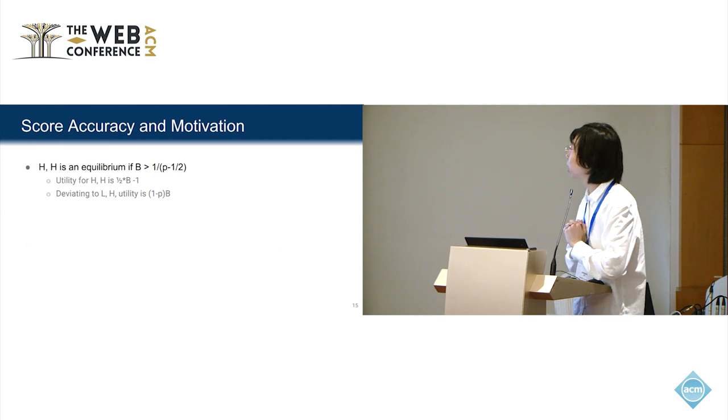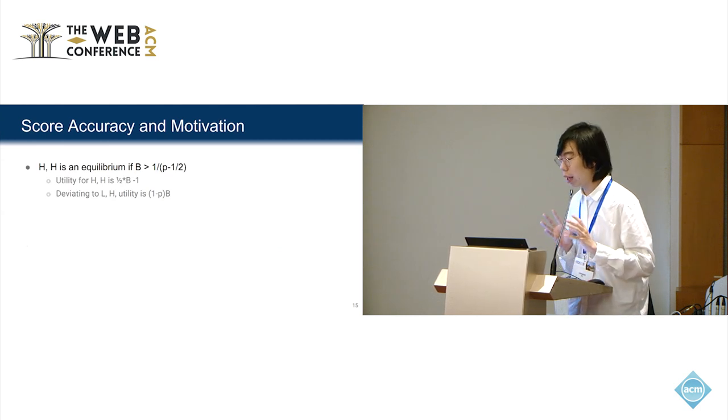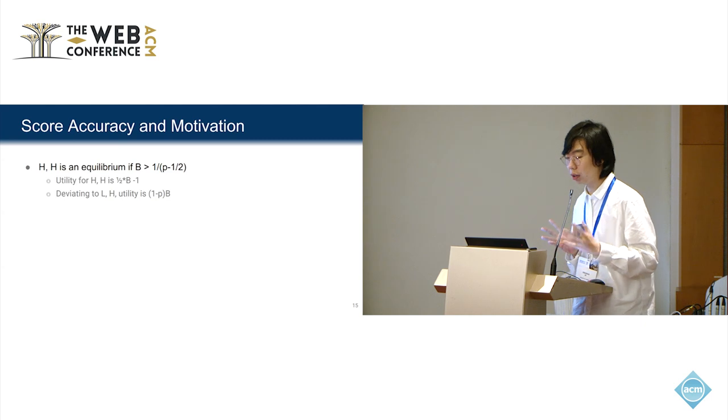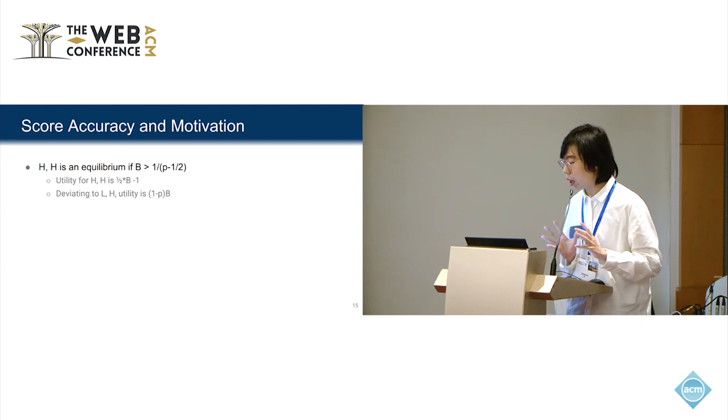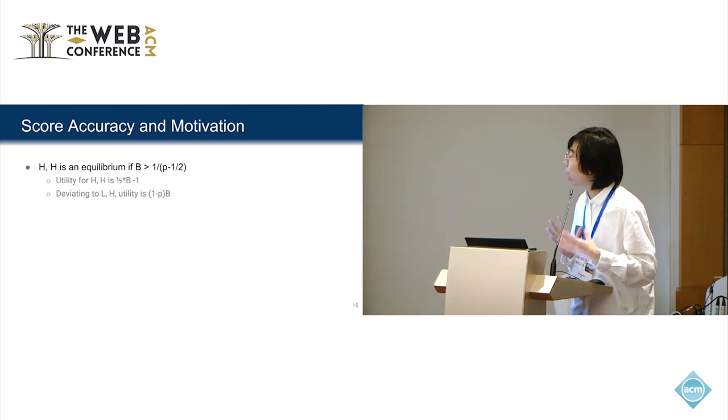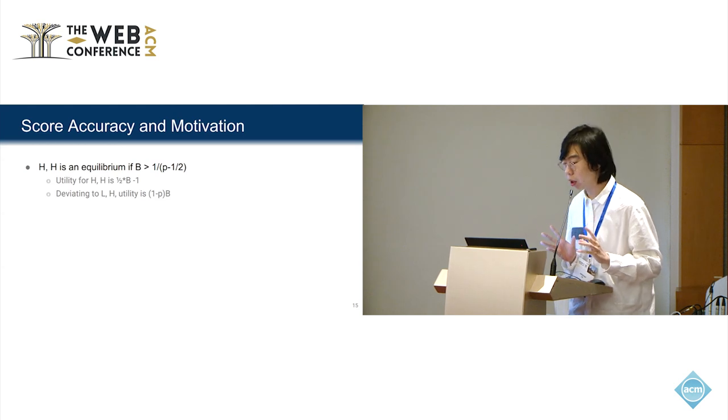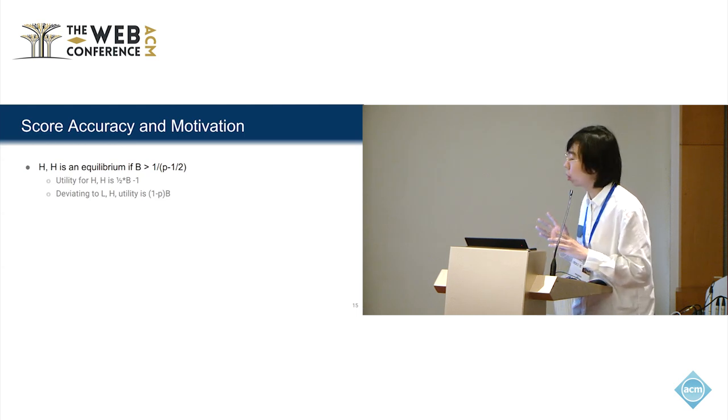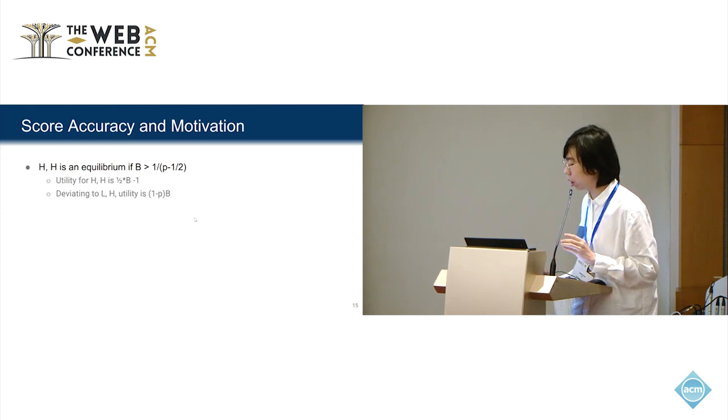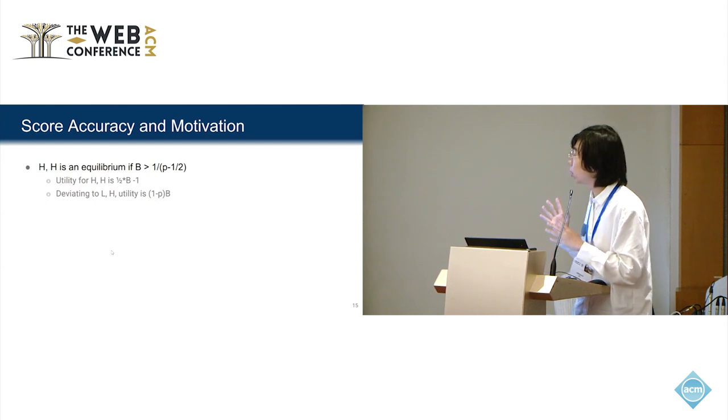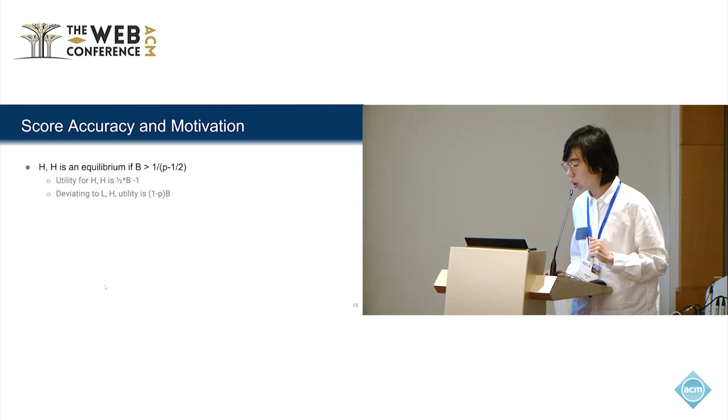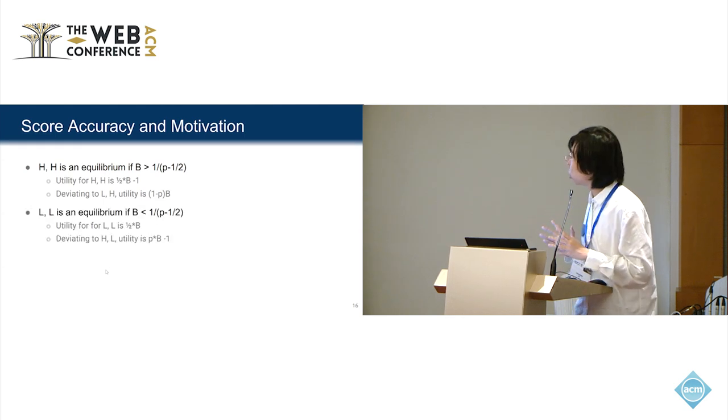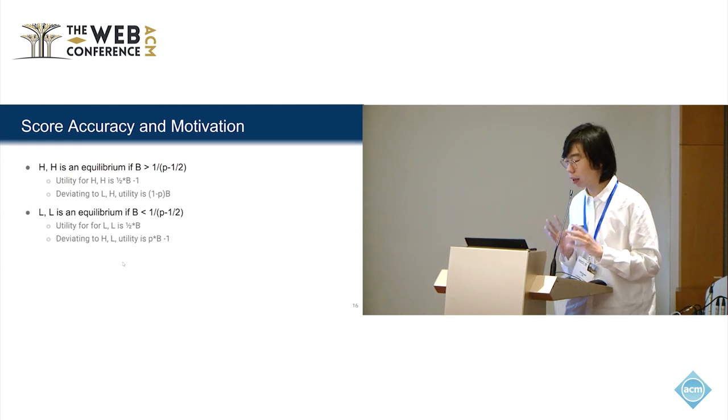Here is their utility. If we want to make high effort an equilibrium, which is what we want, we need to make the payment greater than some threshold. Here is the utility for the agents when they are in this equilibrium. Deviating from high effort to low effort will get utility half minus p times b. So then we can compute that threshold. Similarly, we get a threshold for low effort is an equilibrium.